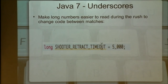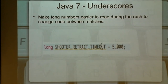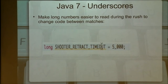Underscores — I like this one and I think it's going to help us a lot. You can now use underscores in numbers. This is helpful if you have a long number. If it's five million or you've got decimals that go on forever, you can divide them with underscores. Adding an underscore where you would normally have a comma is helpful. It lets me see at a glance that that's 5,000 and not 500 or 50,000, which is very helpful when reading code quickly between matches.